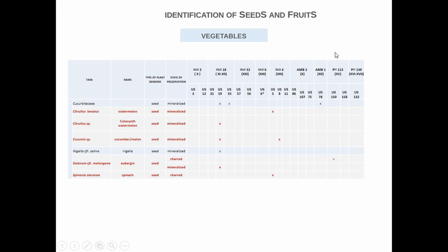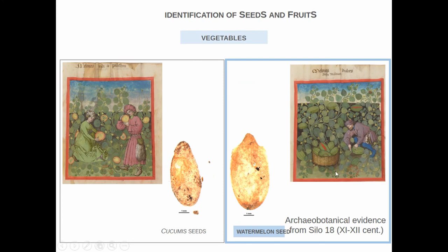Another important group of plants are the vegetables, because one important revolution in the Mediterranean area is horticulture — the cultivation inside gardens. This is connected also to irrigation and the use of water in particular ways. In Mazzara del Vallo, we find watermelon, Citrullus watermelon, different types of cucumber and melon, and other species. In particular, for cucumis, we have different seeds of Cucurbitaceae. The richness of this variability is important, because it is a signal of controlled horticultural agriculture, and it is also a seasonal signal.